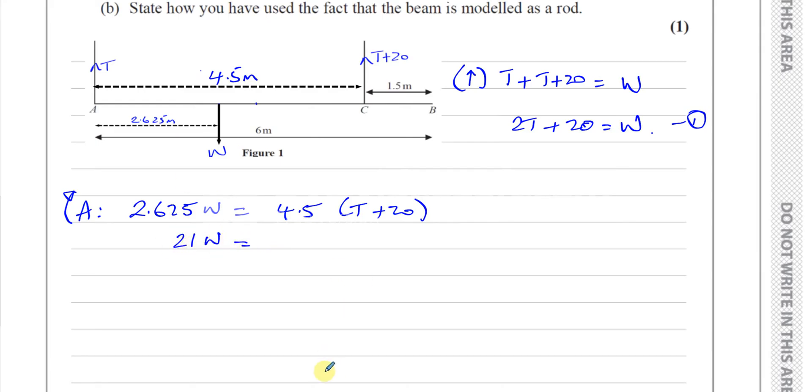So that's 36 times T plus 20. We get 21W is equal to 36T plus 36 times 2 is 720.